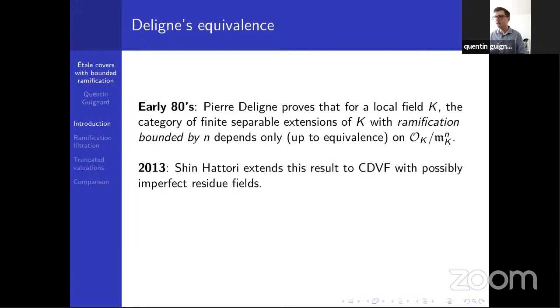More recently, 2013, Shin Hattori extended this result, still for a complete discrete valued field, but this time we have a possibly imperfect residue field. This is a much more complicated situation because the structure of the extension is a lot more complicated. In the perfect residue field case, we always have a monogenic extension and we can rely on the theory of Newton's polygon. It's fairly simple and elementary.